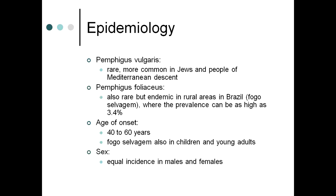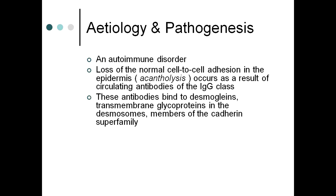Regarding epidemiology, pemphigus vulgaris is rare and more common in Jews and people of Mediterranean descent. Pemphigus foliaceous is also rare but endemic in rural Brazil, with prevalence as high as 3.4%. Age of onset is 40–60 years, though the endemic type (fogo selvagem) also occurs in children and young adults, with equal incidence in males and females.